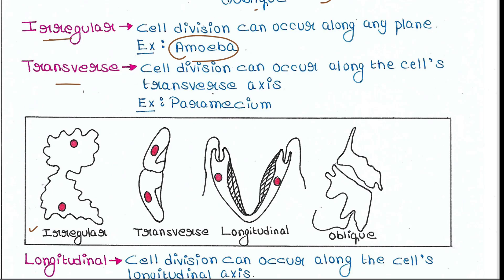Next is transverse binary fission. Here, cell division can occur along the cell's transverse axis. This is found in paramecia.